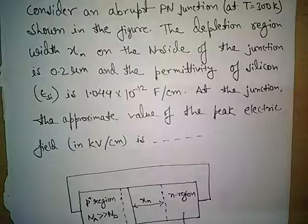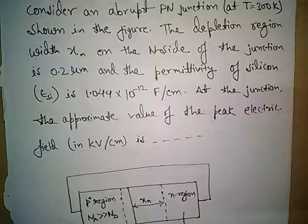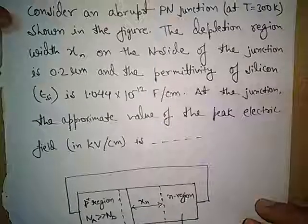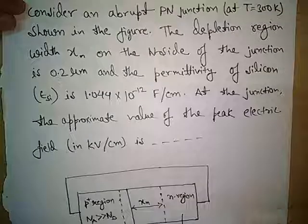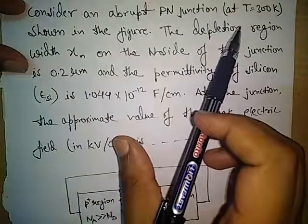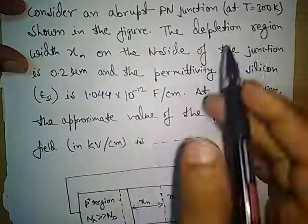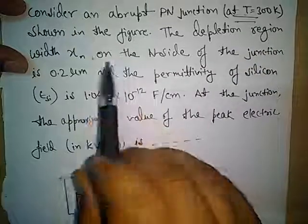In this video, we will learn the concept of electric field at the p-n junction. Here I have taken a question from the previous GATE exam. The question is: Consider an abrupt p-n junction at T equals 300 Kelvin, meaning at room temperature.